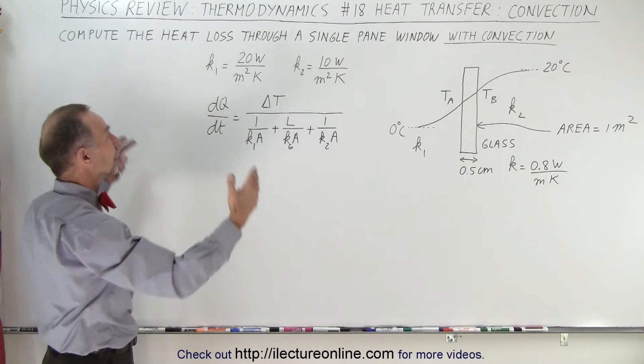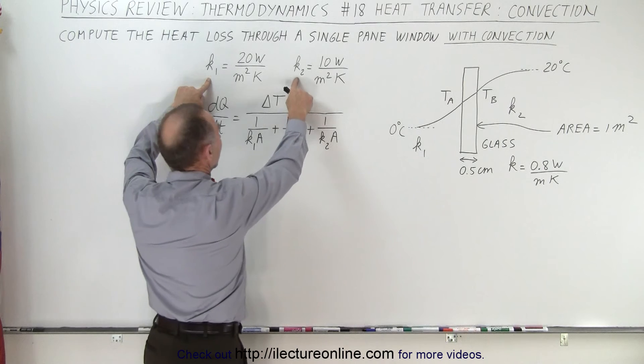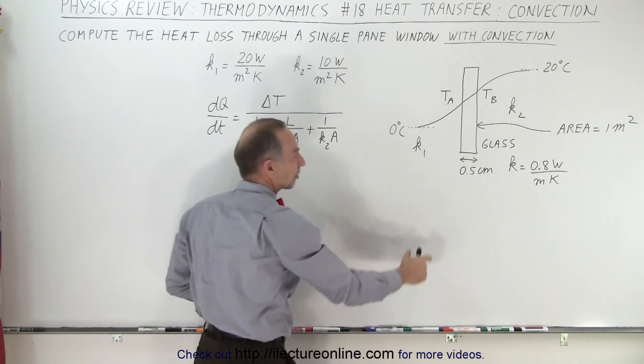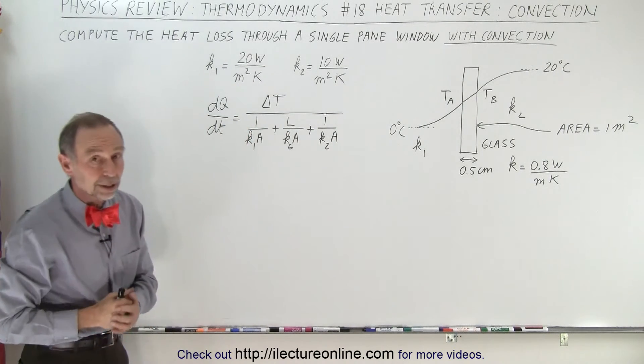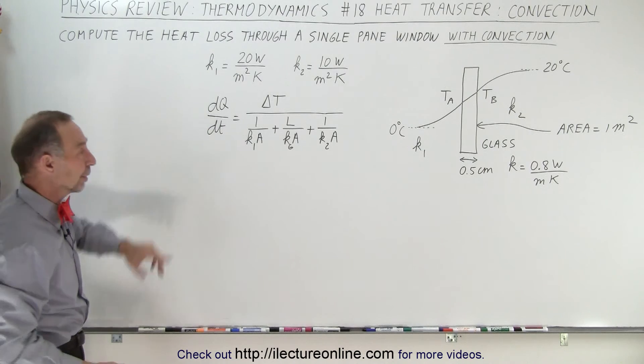That is essentially the problem. That is how you set it up. Of course you need to know what these two constants are for the convection, the constant for the glass, and the thickness of the glass. At that point you just plug in the numbers, use a little algebra, and you find the heat loss through the window.